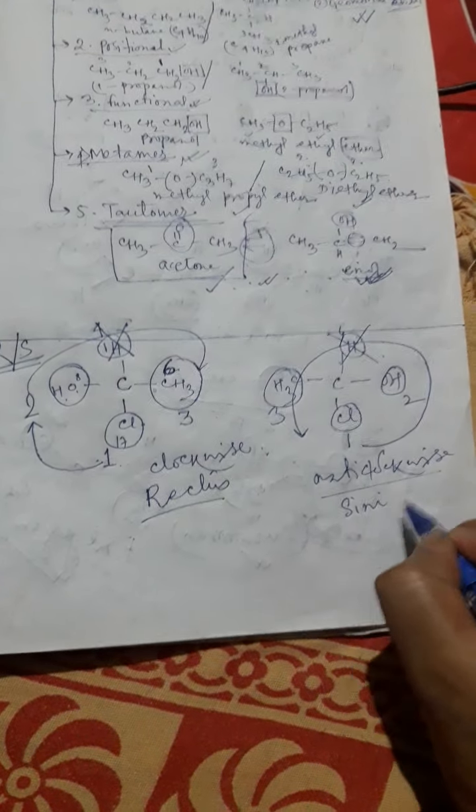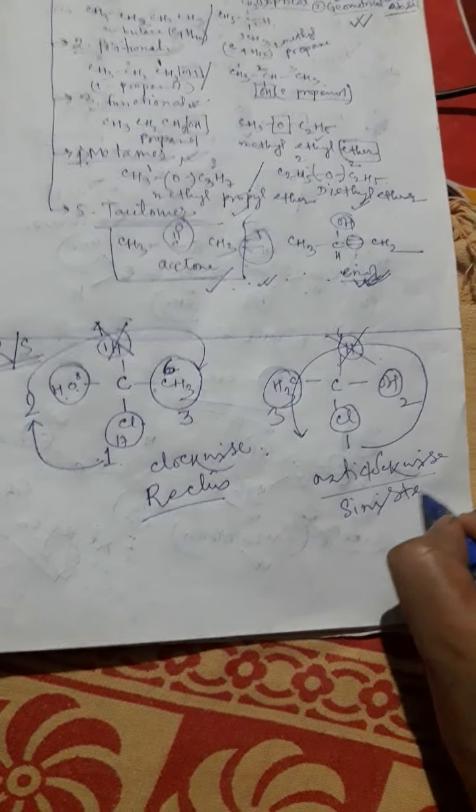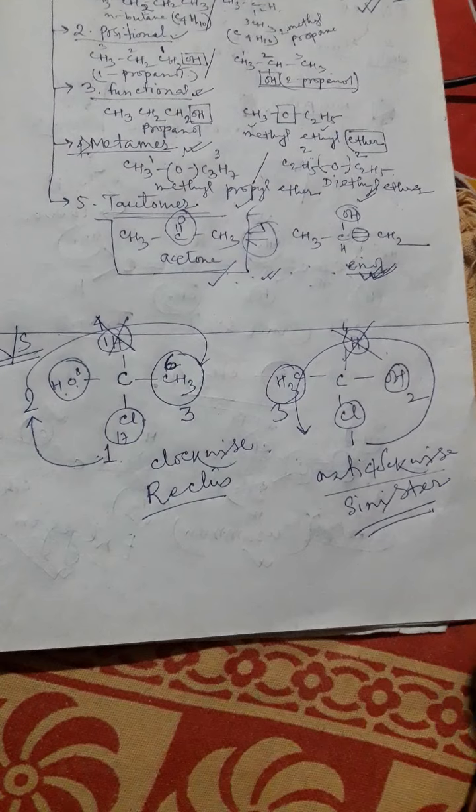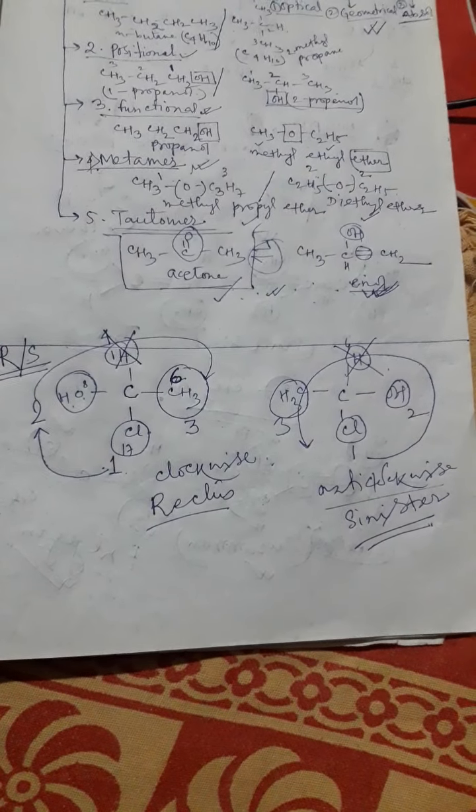When the rotation of the priority groups is anti-clockwise, it is called sinister. By this way, rectus and sinister may be named.